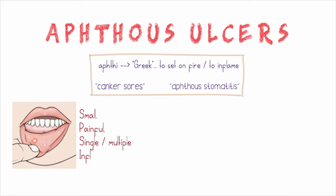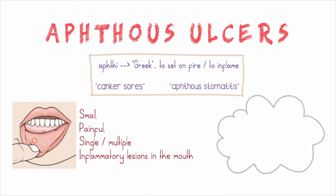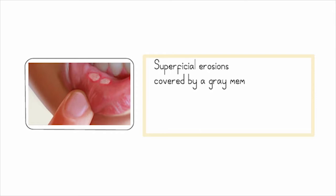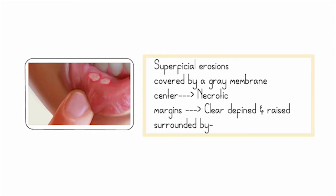These ulcers are usually small, painful, single or multiple inflammatory lesions in the mouth. They are a few millimeters across, round or oval in shape, and usually disappear within a week. Aphthous ulcers usually begin as superficial erosions on free movable oral mucosa. They are covered by a gray membrane with a necrotic center, and the margins are clear, defined, and raised.